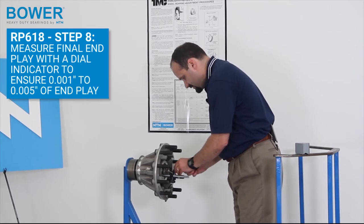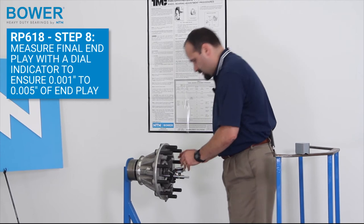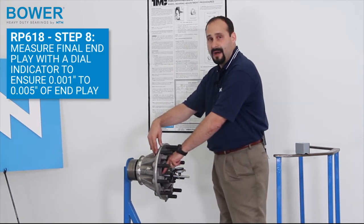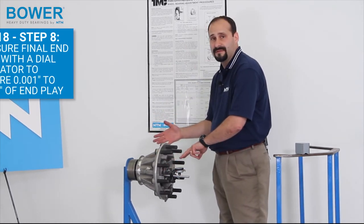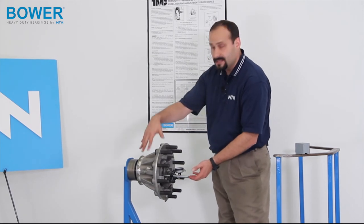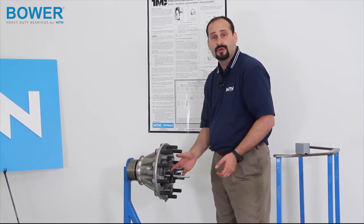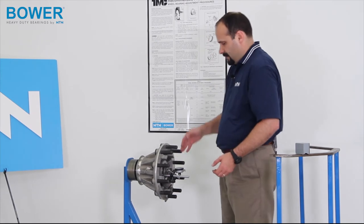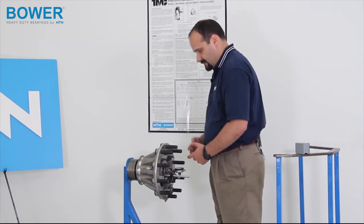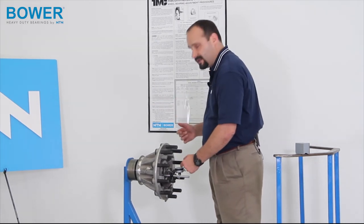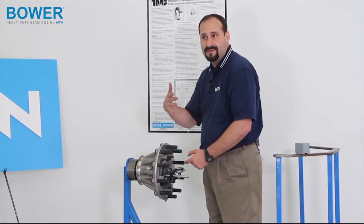The main thing what we want to do here, we're mounted to one component, measuring off another. So, in this case, we're mounted to the hub, and then we're going to measure off the spindle. This dial indicator is a thousandth, is in the thousandth increments, so every little line we have on here is one thousandth worth of end play.